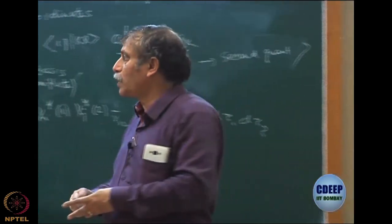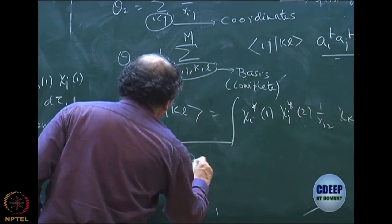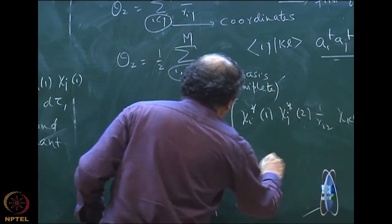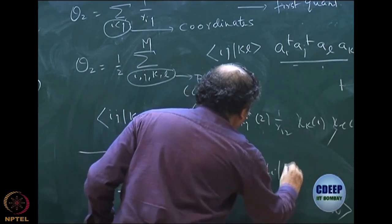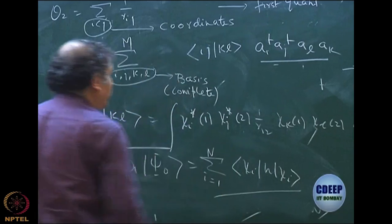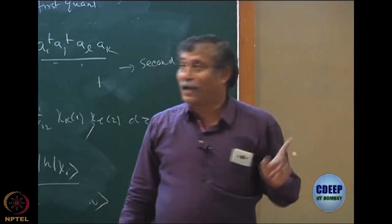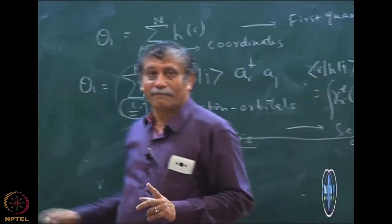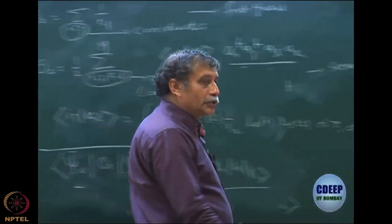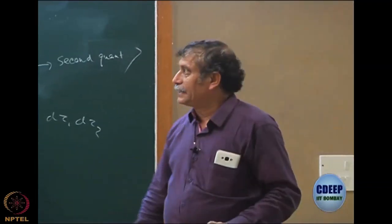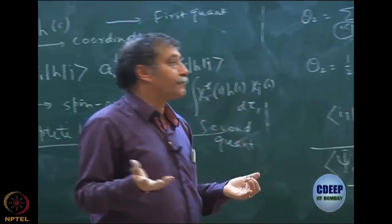What we will do is take a determinant in second quantization on both sides, take the operator in second quantization, expand, and verify the result is the same as obtained by Slater rules in first quantization. For example, <psi_0|theta_1|psi_0>, which we know is sum over i=1 to n of <chi_i|h|chi_i>. The basis has M spin orbitals but only n appear — I have to justify how M becomes n. We will do such practice problems to give you confidence that what has been written is correct.